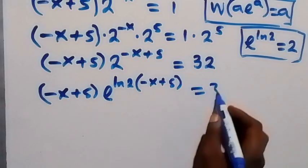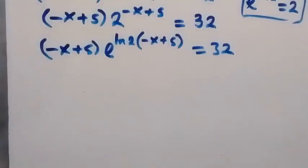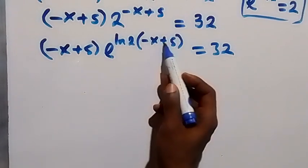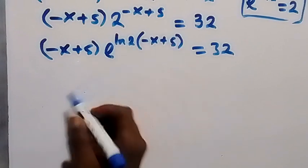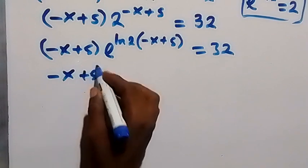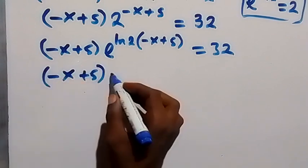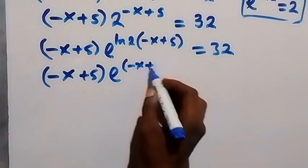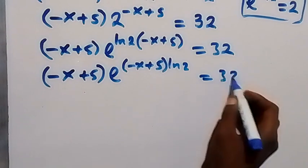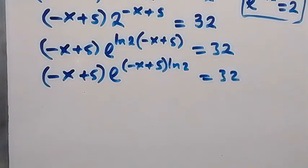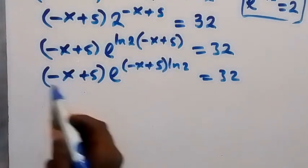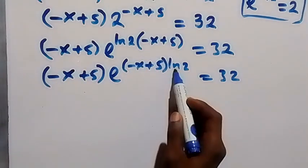This is the same as writing minus x plus 5 times exponent of minus x plus 5 times ln 2 equals to 32. This is a little bit different from the standard form because of this ln 2 factor.